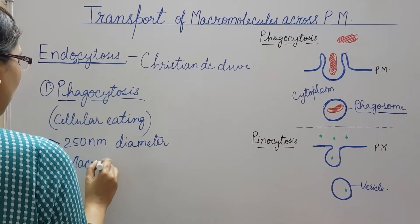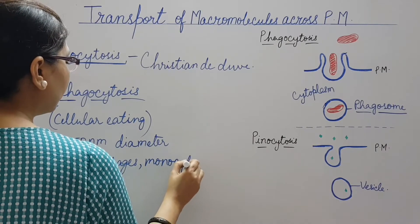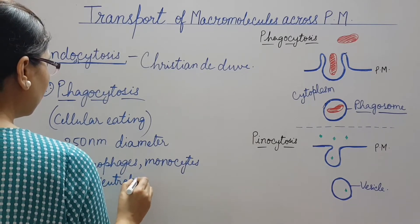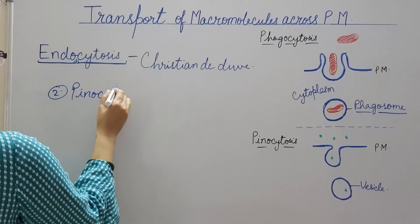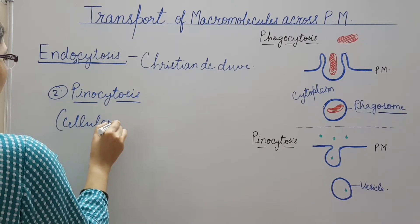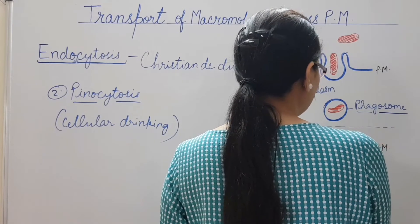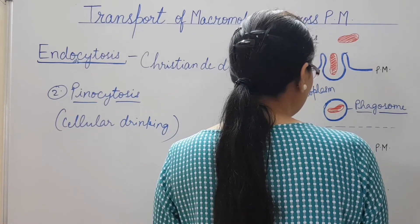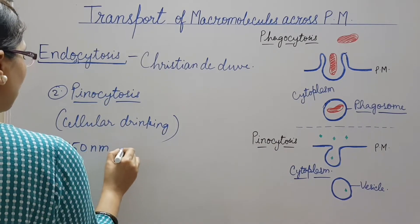Phagocytosis takes place in mammalian cells like macrophages, monocytes, and neutrophils. Second is pinocytosis, also known as cellular drinking. In this, extracellular fluid and small solute particles are internalized by the cell and a membrane bound vesicle is formed that is released in the cytoplasm. The size of the vesicle is less than 150 nanometers in diameter.